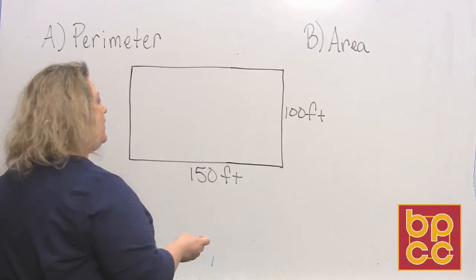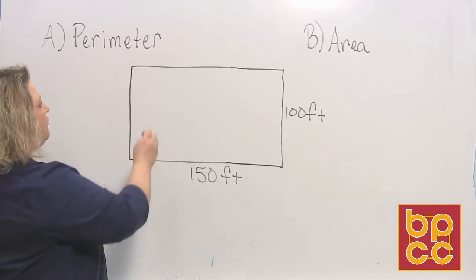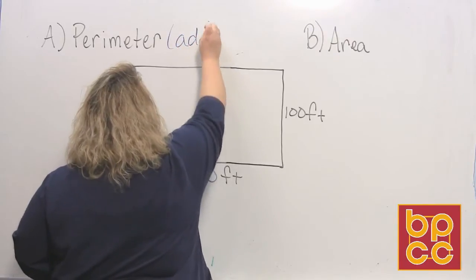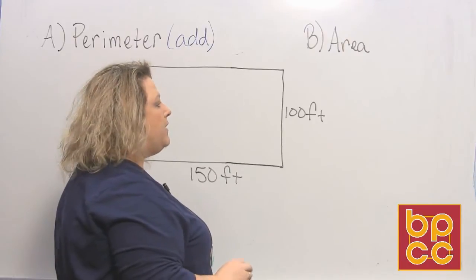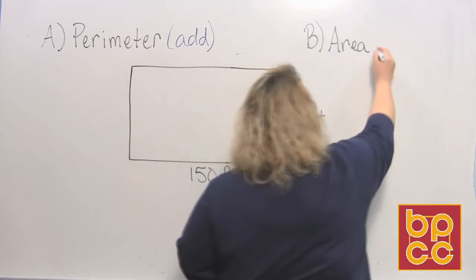We did that on adding, and perimeter means to add the sides together. So for perimeter, we are going to add. And the other part says find the area. The area was when we did multiplication of whole numbers. So area means to multiply.